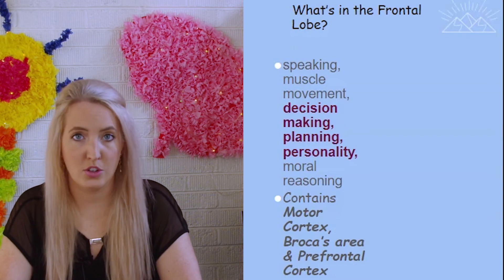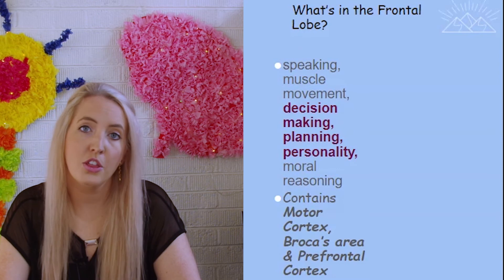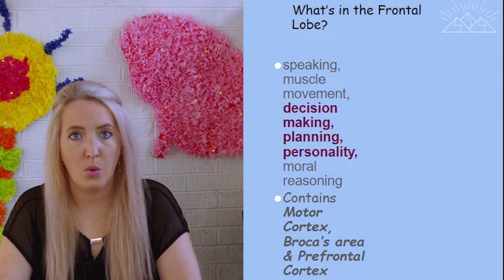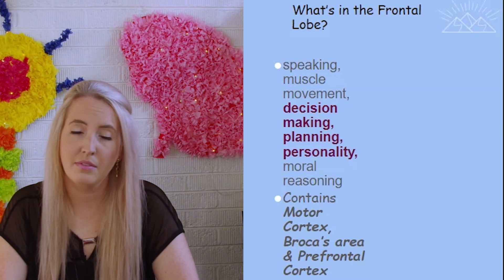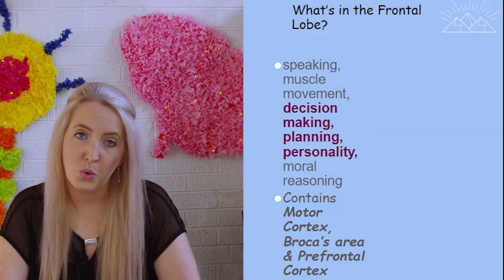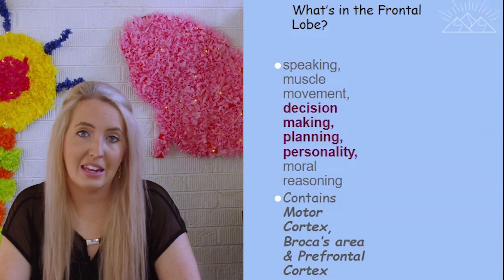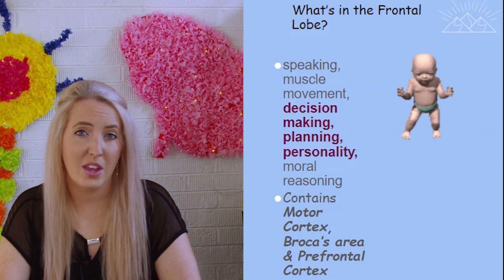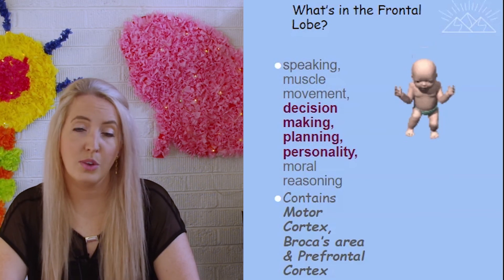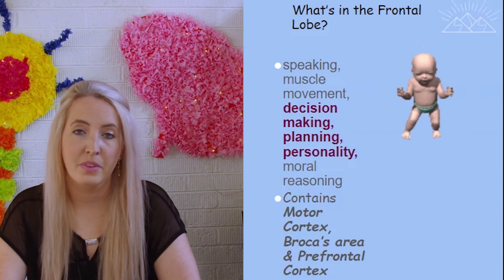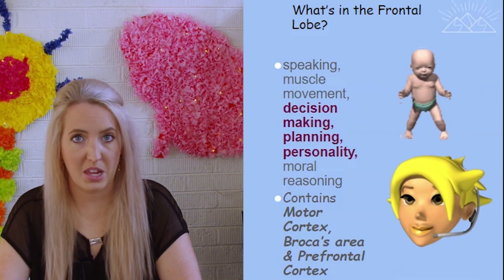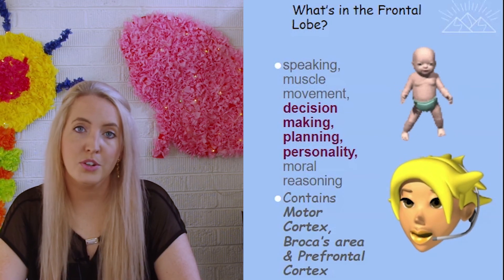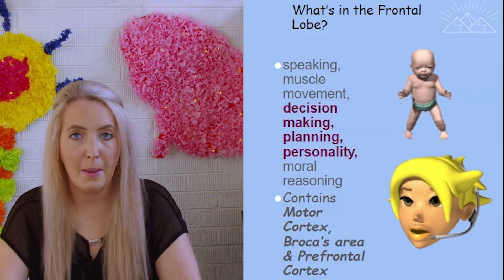Let's start with the frontal lobe, which holds three major structures: the prefrontal cortex, the motor cortex, and Broca's area. The frontal lobe is responsible for planning, movement, decision-making, and moral reasoning. The prefrontal cortex, one of the last parts of our brain to develop, is where planning and decision-making are located. The motor cortex is responsible for muscle movement — when you choose to lift a hand, the front of your brain decides that and moves those muscles. Broca's area is responsible for speech, controlling the mouth movements that form words.